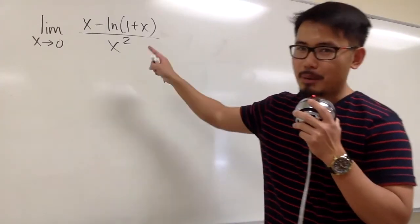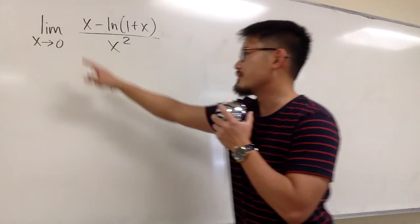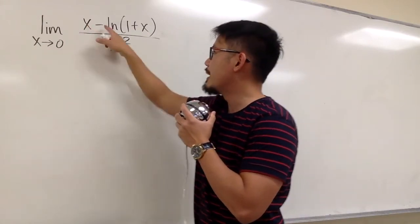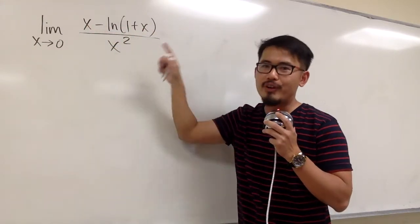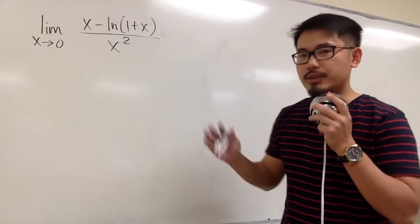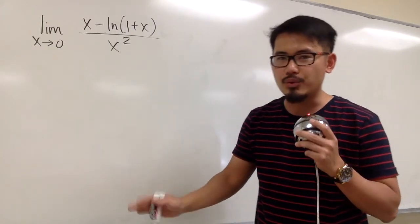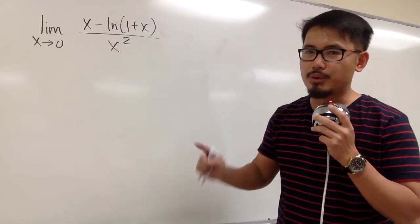Power series is cool because we can use it to calculate this limit. We have the limit as x goes to 0 of (x - ln(1+x)) / x². Here's the deal: we are not going to use L'Hôpital's rule. We will use power series only.